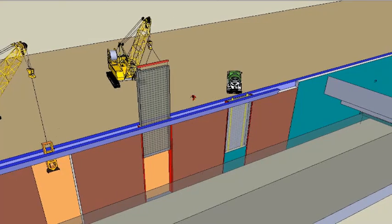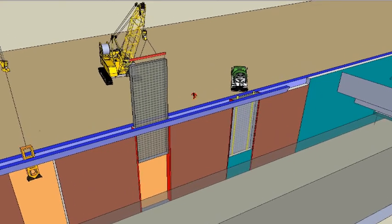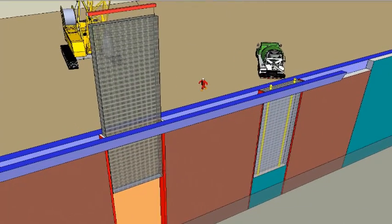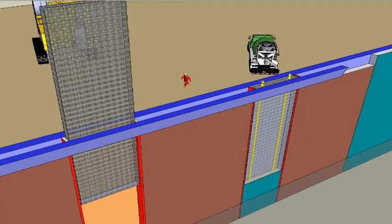Insert steel stop ends with water bar. The stop end will be removed during excavation of adjoining panel. Place prefabricated reinforcement cage in the excavated panel.